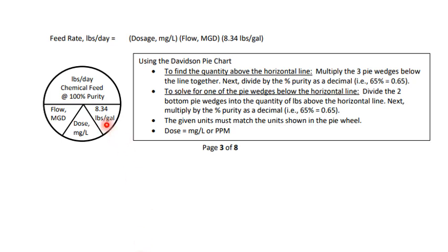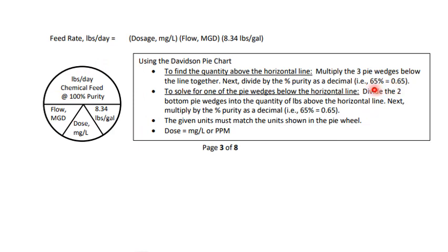The given units must match the units shown in the pie wheel. You can see we are in pounds per gallon, milligrams per liter — milligrams per liter equals parts per million. Flow must be in million gallons a day, and the feed is in pounds per day. Once you've solved the pie chart equation, you multiply purity as a decimal.